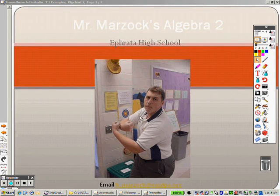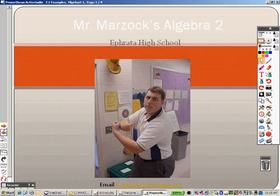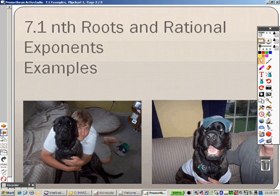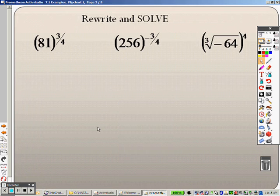All right, 7.1 now. Let's take a look at 7.1. With 7.1 here, 7.1 is nth roots and rational exponents. So I want to take a look at a couple examples here just to make sure that you get all this. We're on the same page here.